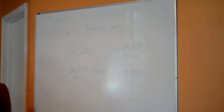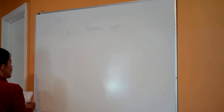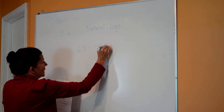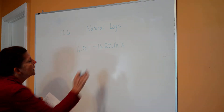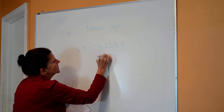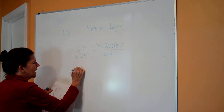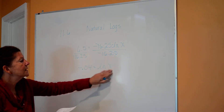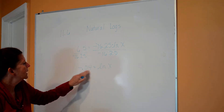So we can use natural log or common log to solve equations. This first one you're going to have to use the natural log. I have 6.5 is equal to negative 16.25 times the natural log of x. I've got a natural log on one side, so the first thing I want to do is divide both sides by negative 16.25. That gives me negative 0.04 is equal to the natural log of x.